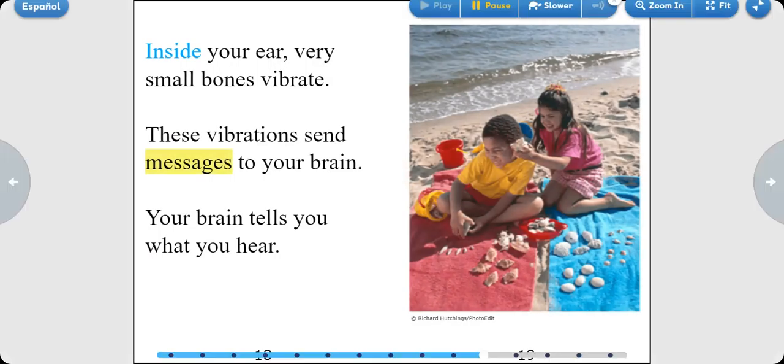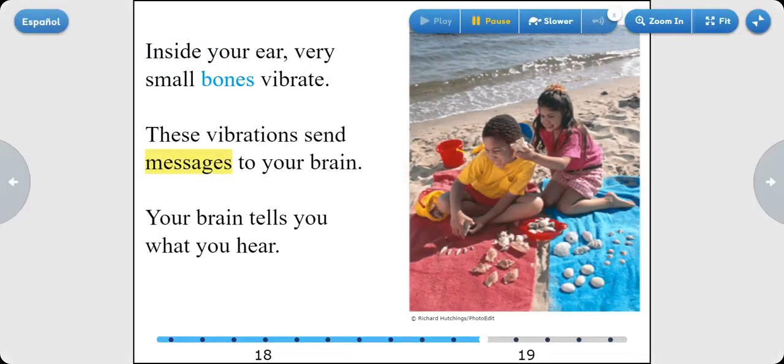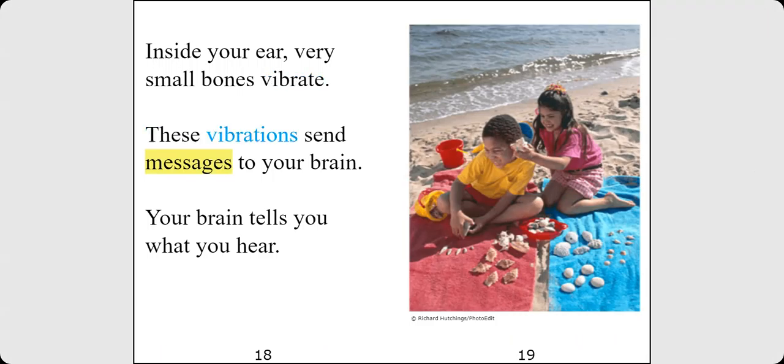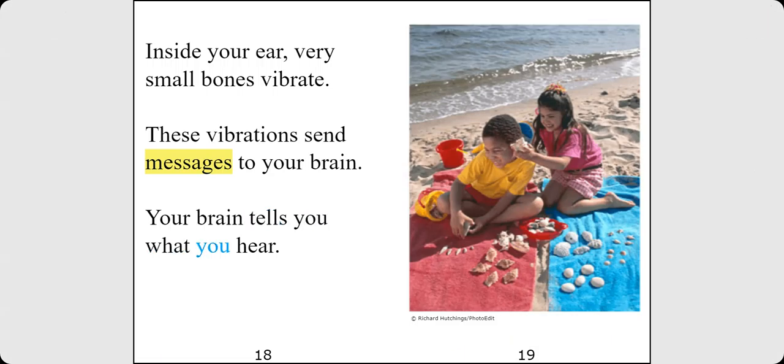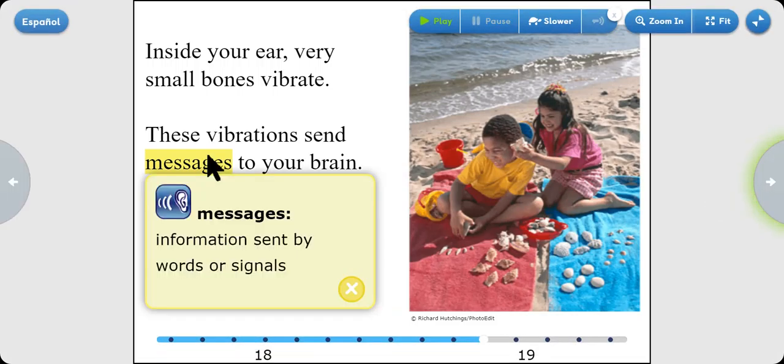You see this boy? He is shouting. Inside your ear, very small bones vibrate. These vibrations send messages to your brain. Your brain tells you what you hear. Messages: information sent by words or signals.